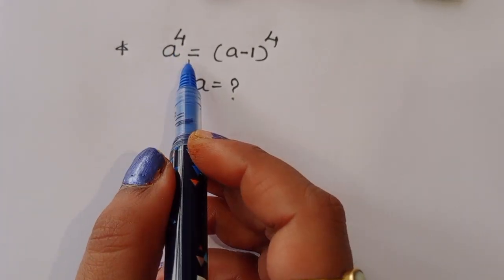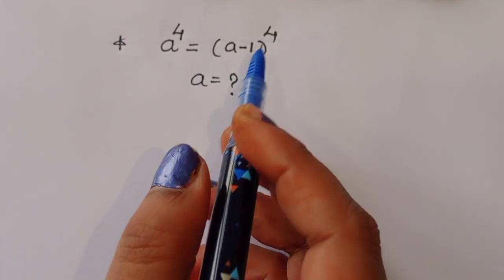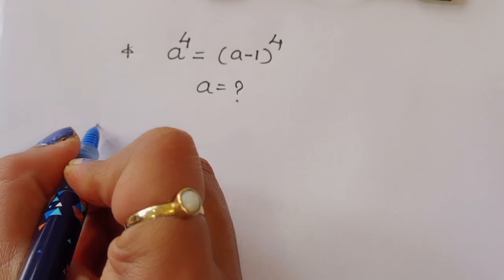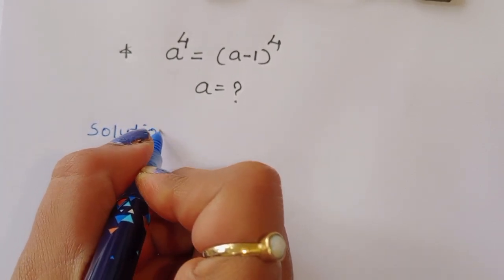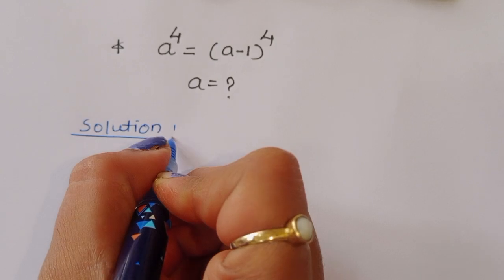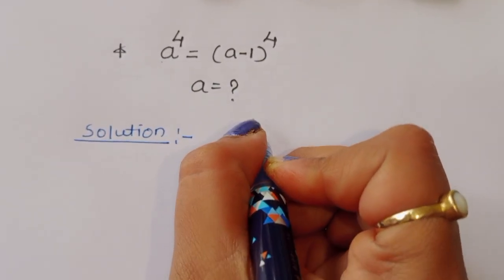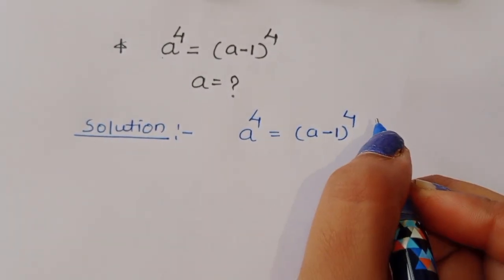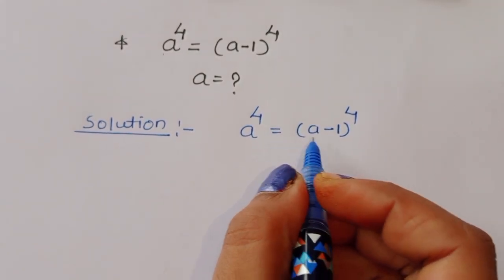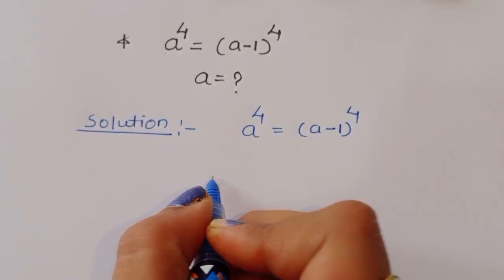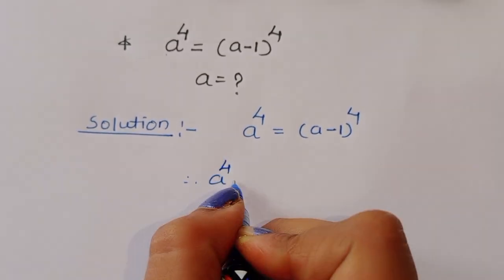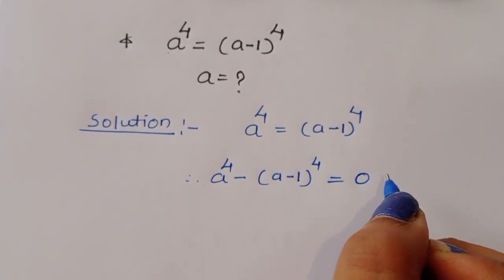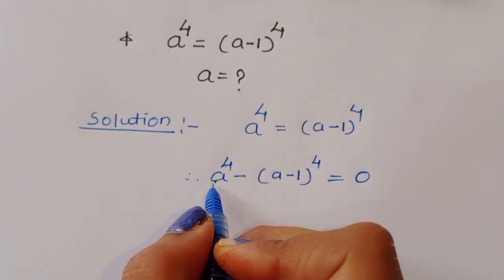The question is: given a power 4 is equal to (a minus 1) power 4, we have to find the value of a. In the solution, what is given is a⁴ = (a-1)⁴. We can rearrange this term, therefore a⁴ minus (a-1)⁴ is equal to 0.